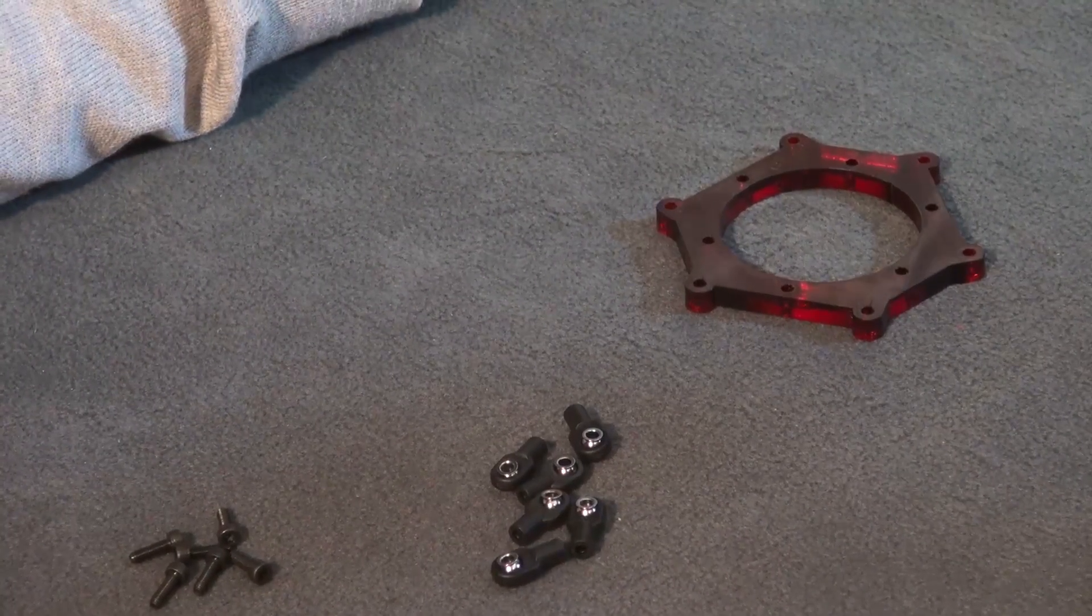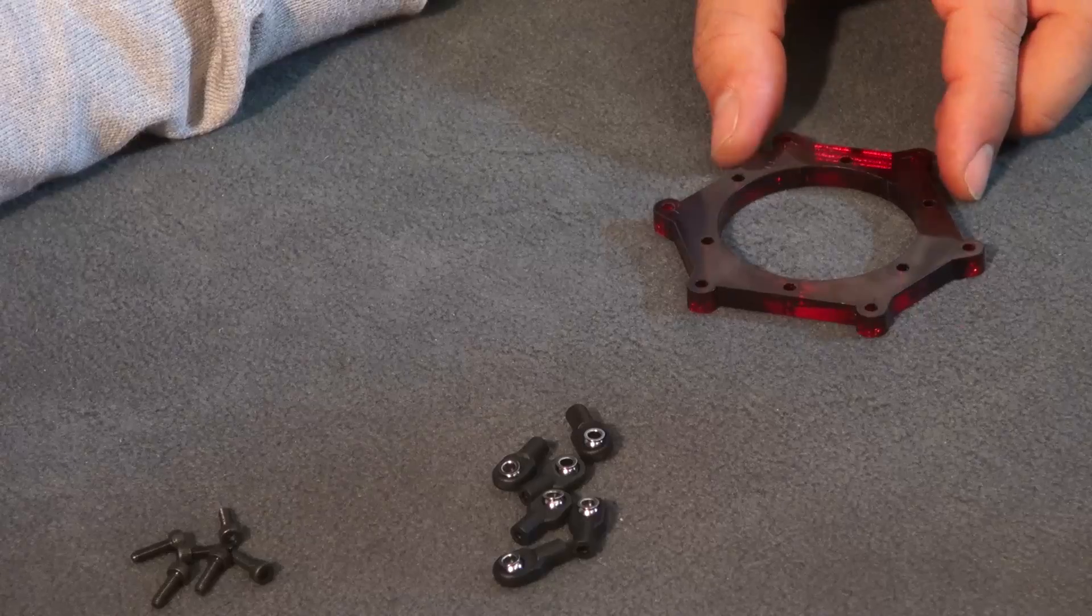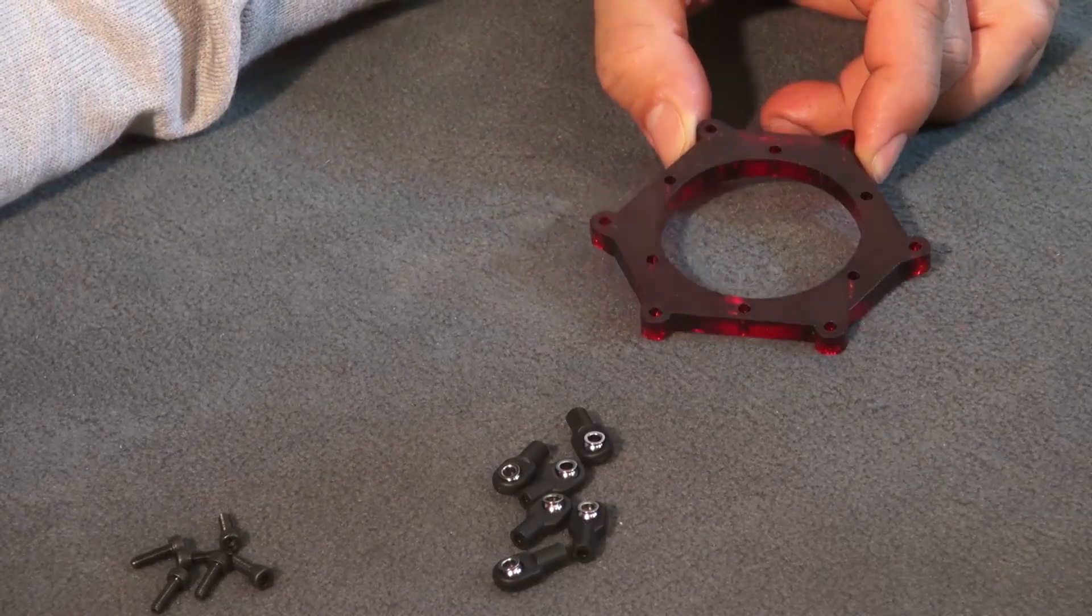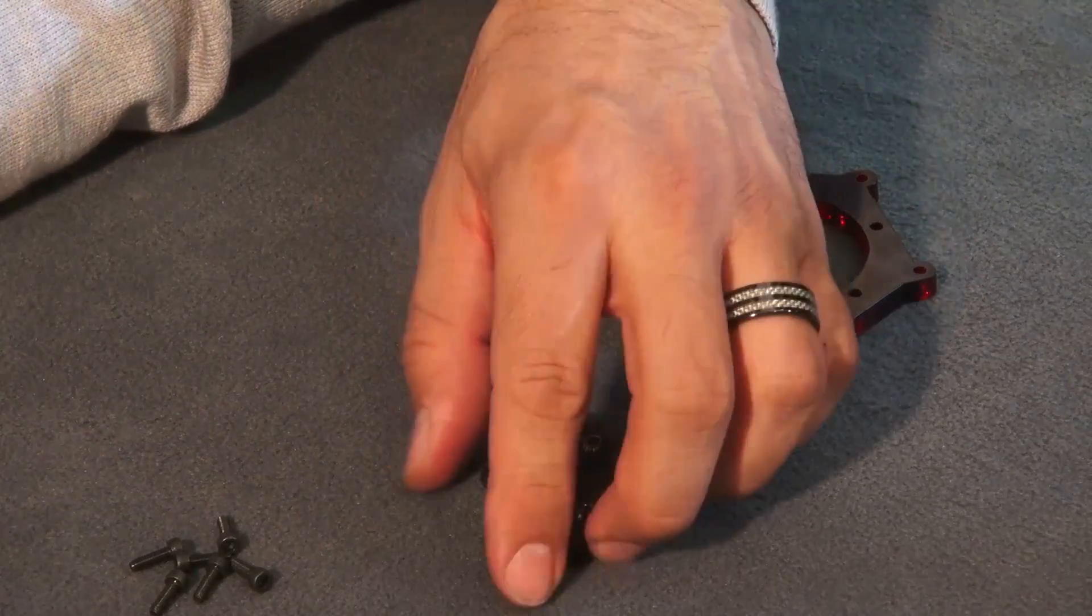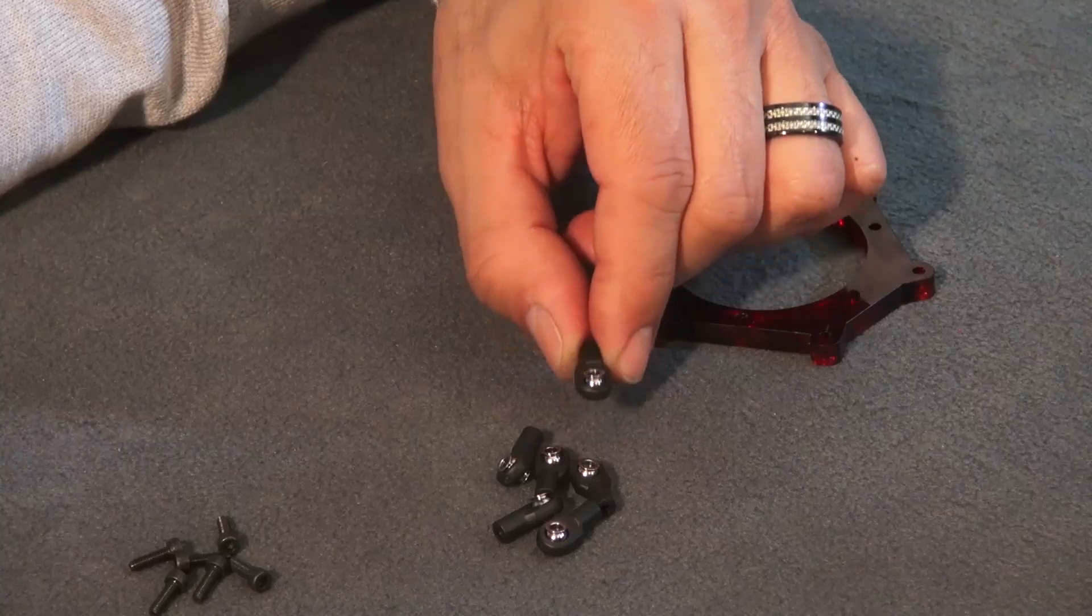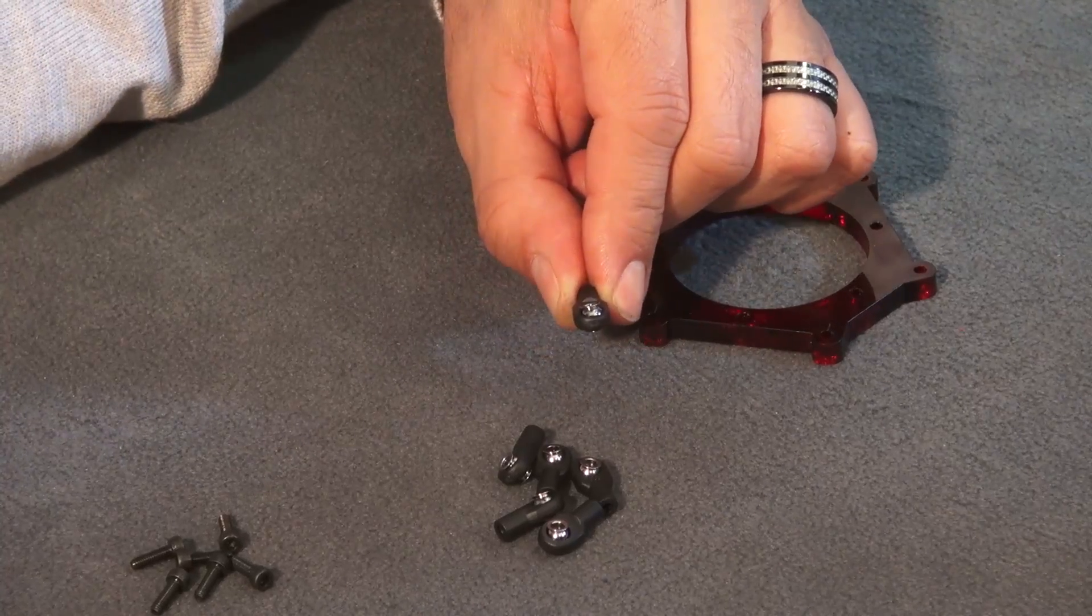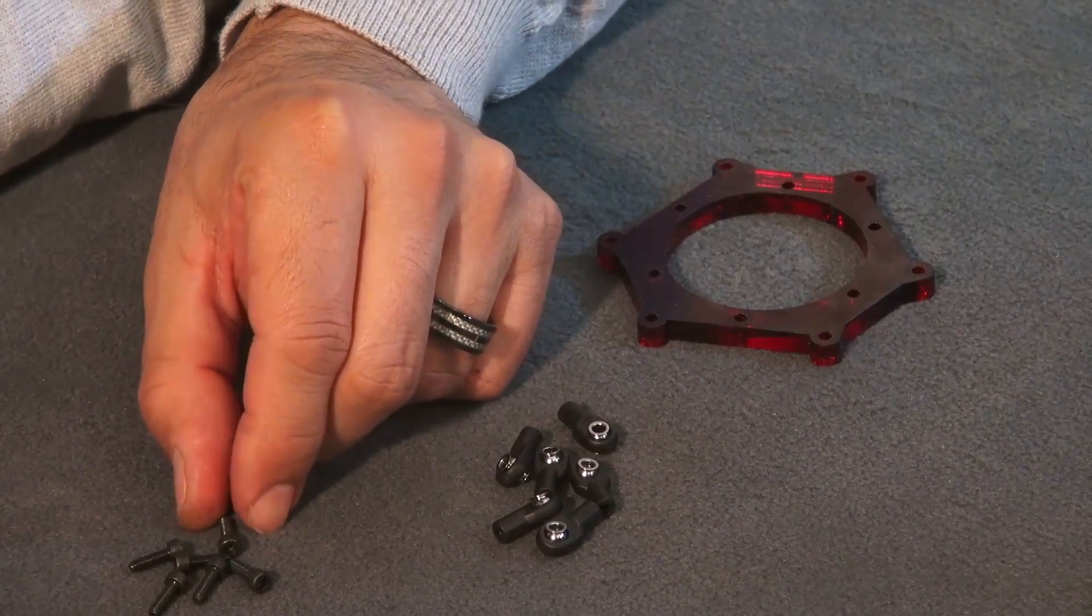Next, we're going to work on the arm assembly. It consists of part F, six ball joints, and six M3 by 10 millimeter bolts.